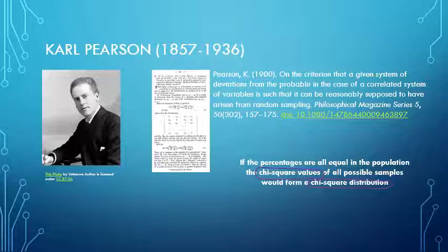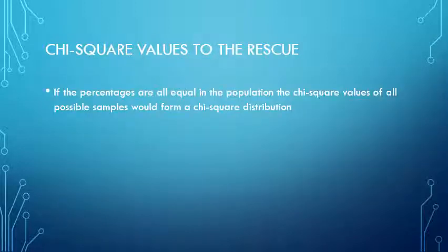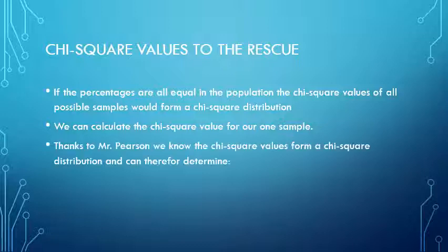What is a chi-square value, or at least how do we obtain one, and what's so significant about knowing that they form a specific type of distribution? If the percentages are all equal in the population, the chi-square value of all possible samples would form a chi-square distribution. We can calculate such a chi-square value for our single sample.